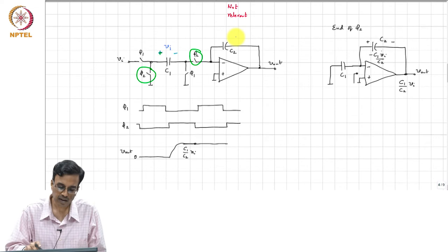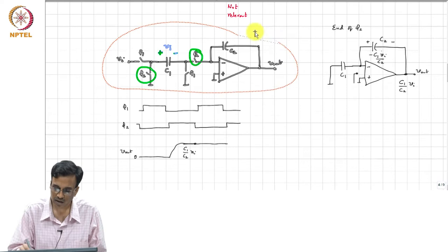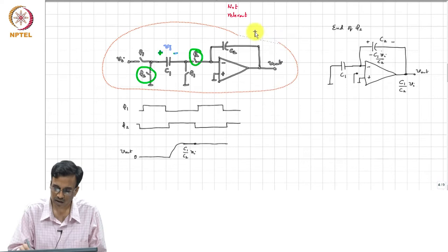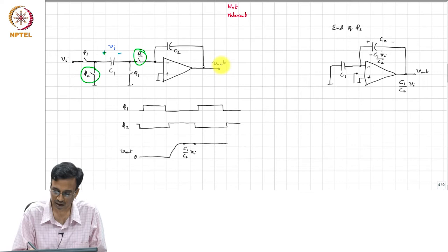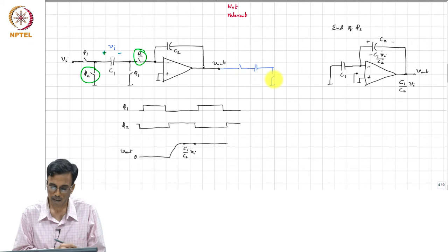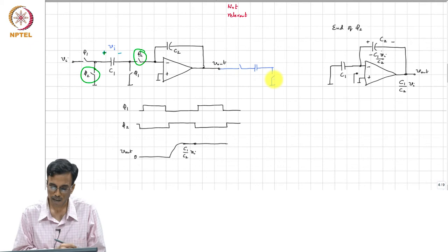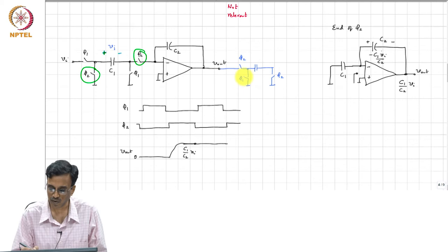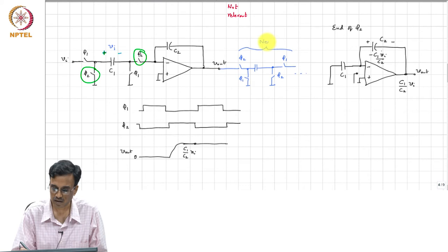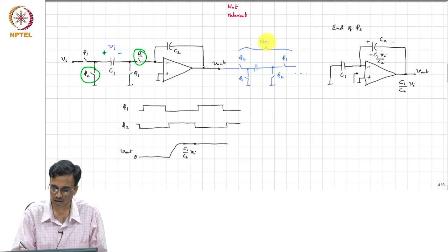Now, the output of this integrator is going to be read or sensed by a similar switch capacitor circuit. So, this is the next stage. Let's say this samples on phase 2. There are many ways to do this, but there is something representative here and this goes to the next stage.